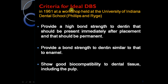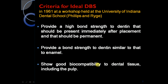The criteria for an ideal dentine bonding system were outlined in 1961 at a workshop held at the University of Indiana Dental School by Phillips and Reg. It should provide a high bond strength to dentine immediately after placement, that should be permanent, and provide a bond strength to dentine similar to that of enamel. It should also show good biocompatibility to the dental tissues.